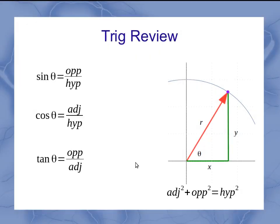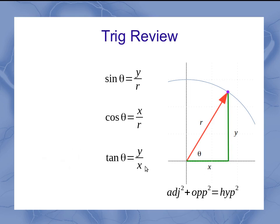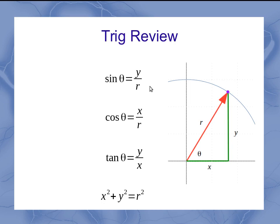Applying this to the triangle with x, y, and r theta coordinates: sine, instead of being opposite over hypotenuse, becomes y over r. The adjacent over hypotenuse for cosine becomes x over r. The opposite over adjacent for tangent becomes y over x. And the Pythagorean theorem — adjacent squared plus opposite squared equals hypotenuse squared — becomes x² + y² = r².